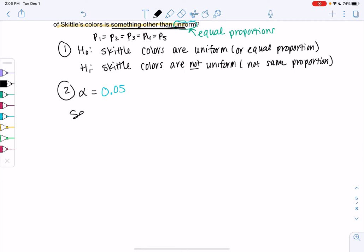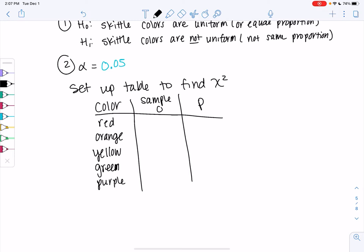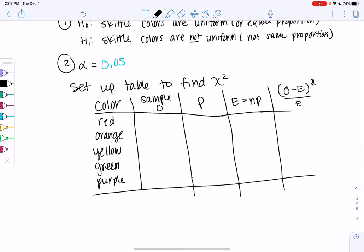We'll go ahead and set up a table to find chi-square. We're not doing a z-score or a t-score. There's five categories. It's just not possible. So chi-square does it for us. We're going to set up color: red, orange, yellow, green, purple. And then we'll have the O column, which is our sample, the P column, which is the percent, then the expected, which is N times P. And then our final column will be O minus E squared all over E.